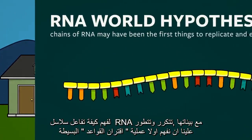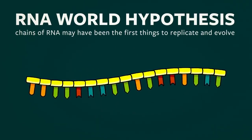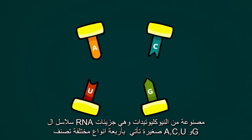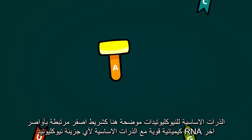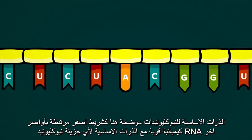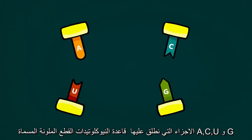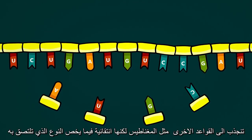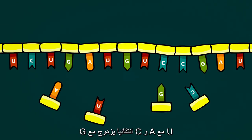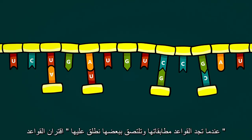To understand how RNA chains can interact with their environments, replicate, and evolve, we first need to understand the simple process of base pairing. Chains of RNA are made of nucleotides — small molecules that come in four different types labeled A, C, U, and G. The backbone atoms of a nucleotide, shown here as a yellow bar, can form strong chemical bonds with the backbone atoms of any other RNA nucleotide, meaning different chains can have completely different sequences. The parts we call the bases — the colored sections labeled A, C, U, or G — are attracted to other bases, sort of like a magnet, but they're selective: G selectively pairs with C, and A selectively pairs with U. When bases find their matches and stick together, we call it base pairing.